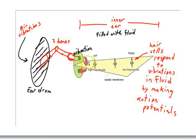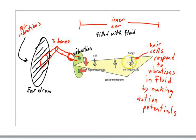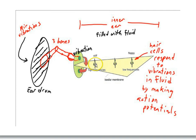Cells closest to the oval window respond to high frequencies. When the sound coming in has high frequencies, the nature of the waves set up in the fluid is such that these cells respond. But cells further down the basilar membrane respond to lower frequency waves. So in this case, we have place coding because the placement of these sensory cells is coding for — or representing — the frequency of the vibration out in the world. When these cells are active, it represents high frequency vibrations; when those cells are active, it represents low frequency vibrations.